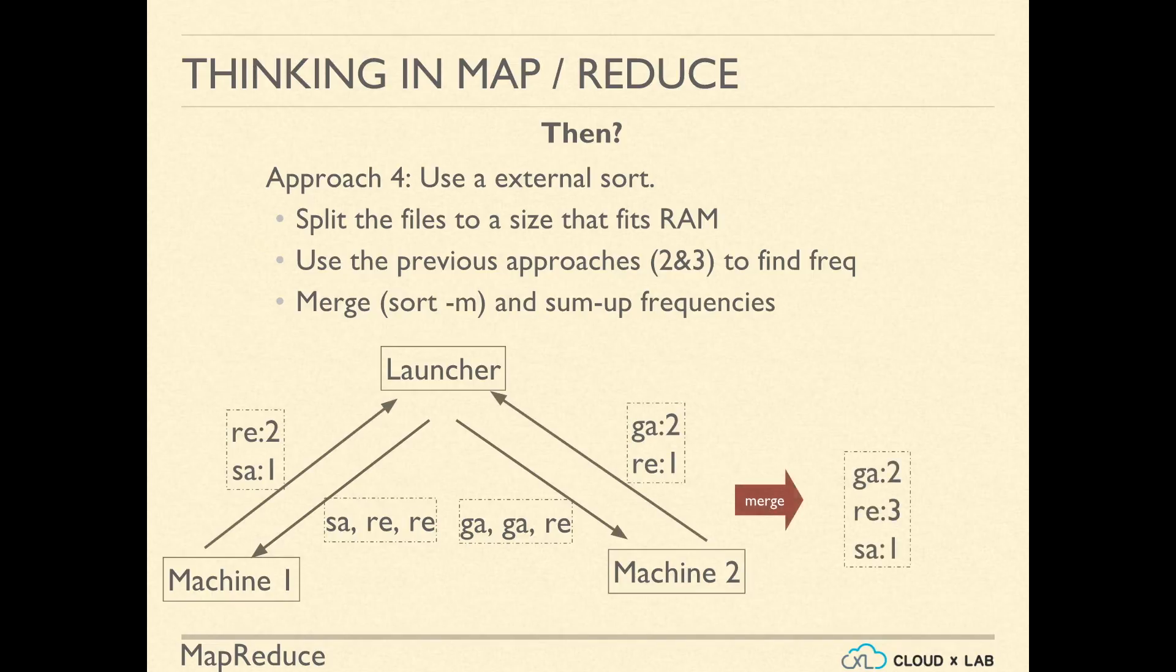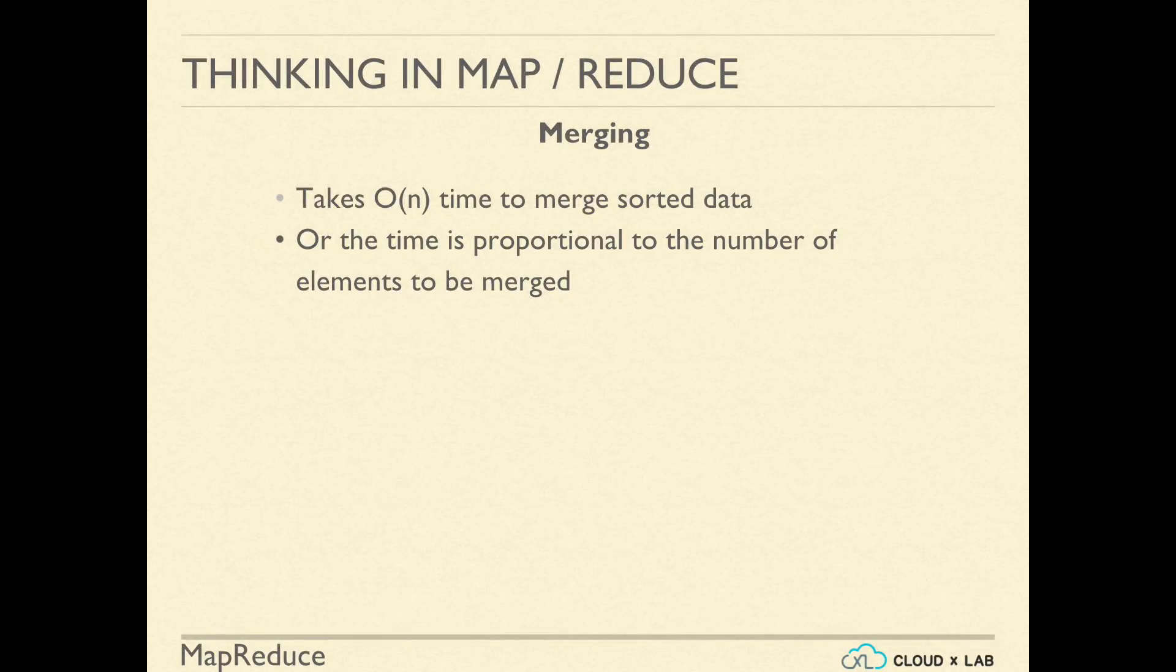The launcher merges the results. Please note that the results the launcher gets from both machines are ordered, so that merging gets easy because merging ordered data is really fast. The time it takes to merge ordered data is linearly dependent on the total number of elements to be merged.